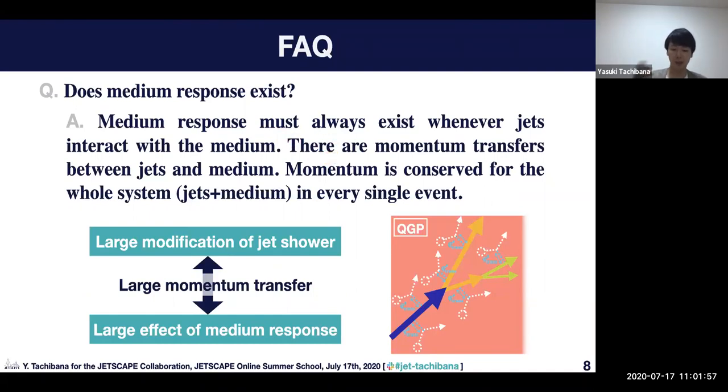Because there are momentum transfers between jets and medium, momentum must be conserved for the whole system (jet plus medium) in every single event.